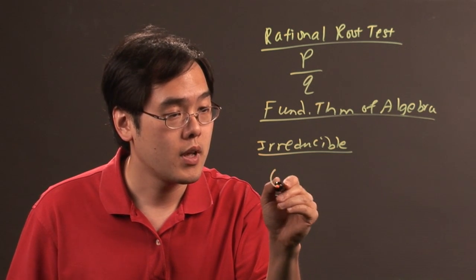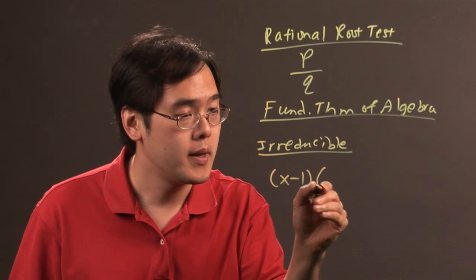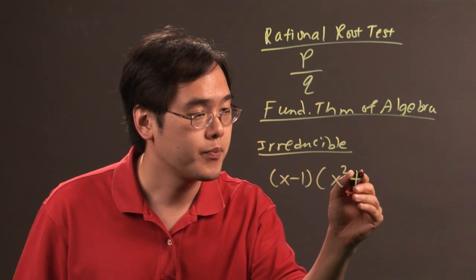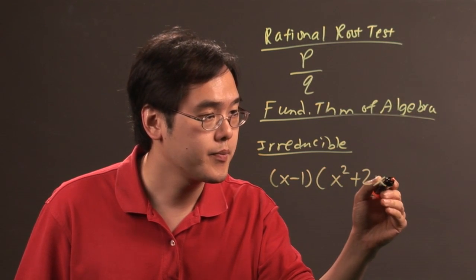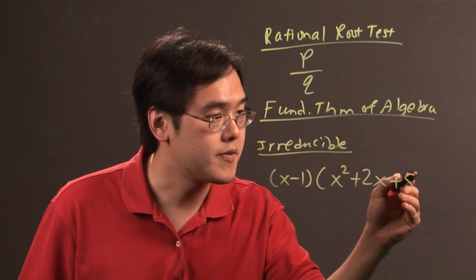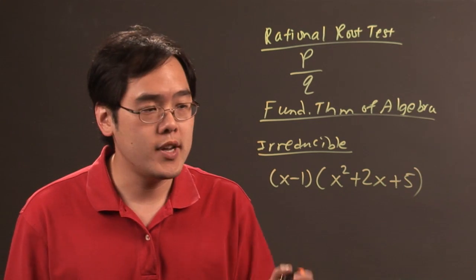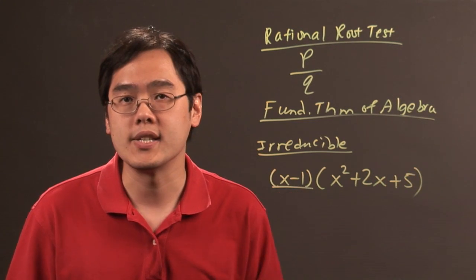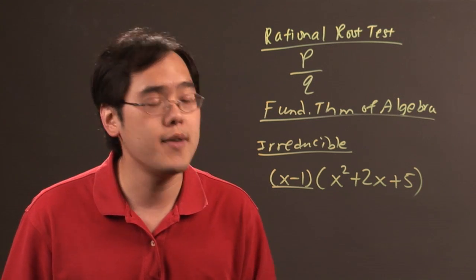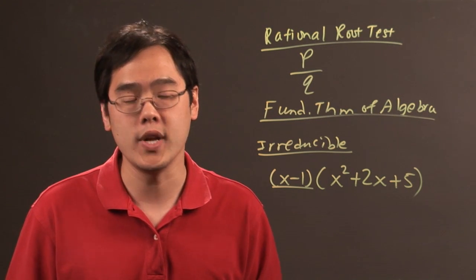If you have (x minus 1) times (x squared plus 2x plus 5), what you have here is, this is pretty straightforward as it is because it's linear, but the x squared plus 2x plus 5 is an example that's irreducible over the reals.